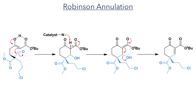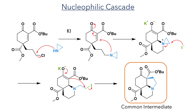The enol of the beta-keto ester adds to the aldehyde and the resulting beta-hydroxy ketone undergoes an E1cb elimination to form a new double bond in the molecule. Overall, this step forms a cyclohexanone ring with a quaternary centre in a highly stereoselective manner. The synthesis proceeds to the next stage which is to form two more rings in a single reaction sequence. This transformation is accomplished using a nucleophilic cascade strategy.